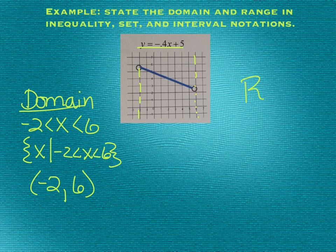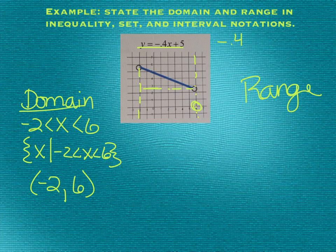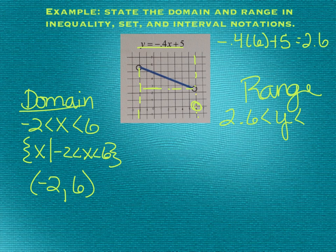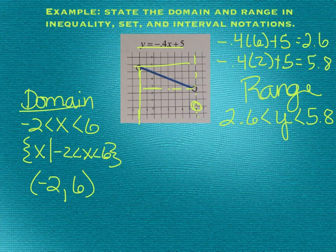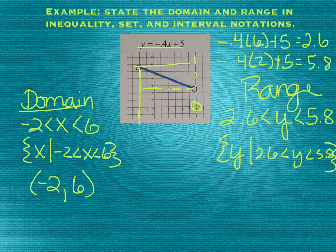Now for the range — because I've given you the function, you can't just assume that it's two and a half. You need to actually plug in, because we're looking at the lowest y value right here. We're going to plug in a six: negative 0.4 times 6 plus 5 gives us 2.6. So 2.6 is the lowest y value — 2.6 is less than y is less than, and then I can plug in negative two for the highest y value. Negative 0.4 times negative two plus 5 gives us 5.8. In set notation: y given 2.6 is less than y is less than 5.8. Interval notation: soft bracket 2.6 comma 5.8, soft brackets on both.